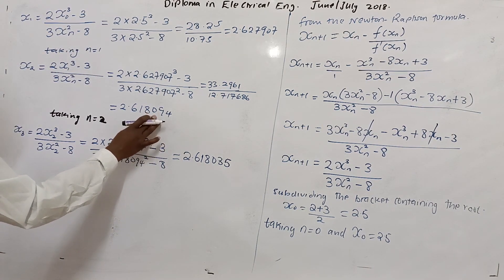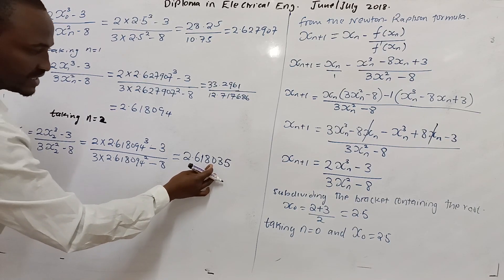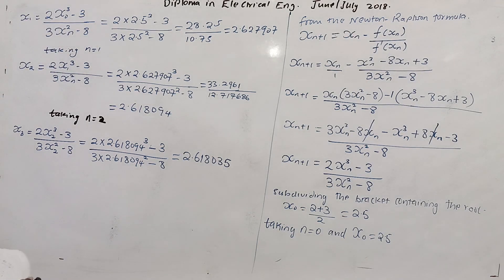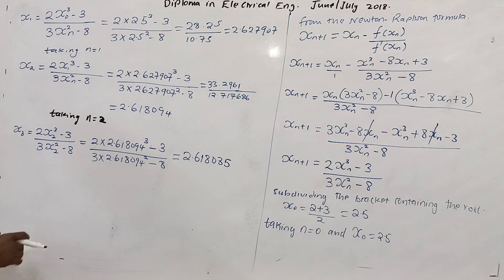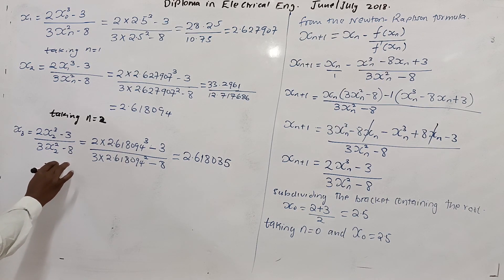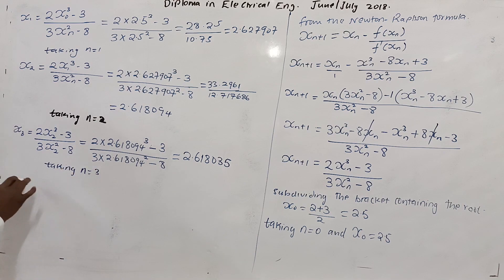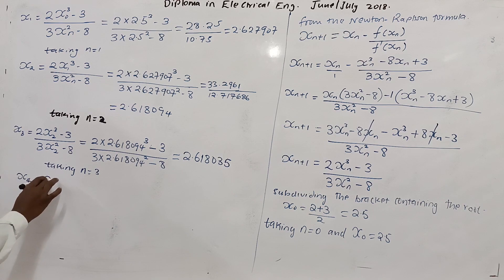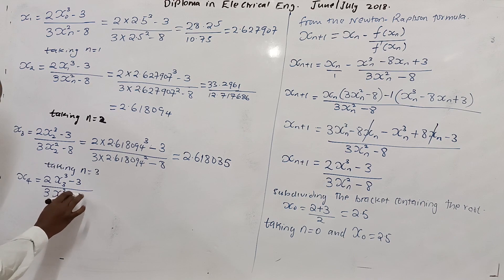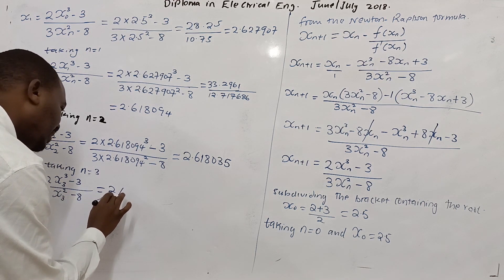Let us do one more iteration. Taking n = 3, x₄ = (2x₃³ - 3) / (3x₃² - 8). Always be very keen with your working — if you make a single mistake, the iteration will diverge instead of converge. So x₄ = (2(2.618035)³ - 3) / (3(2.618035)² - 8).